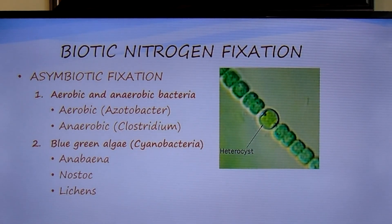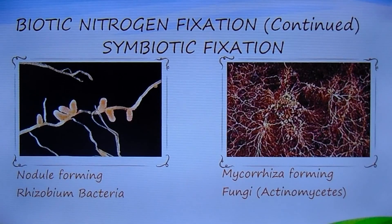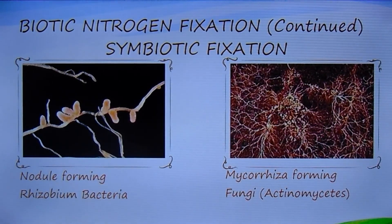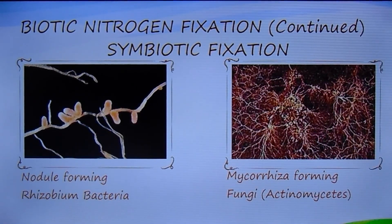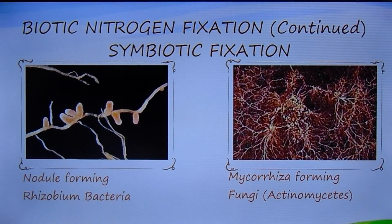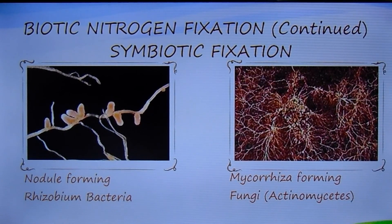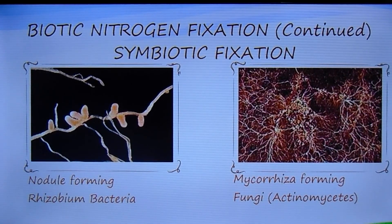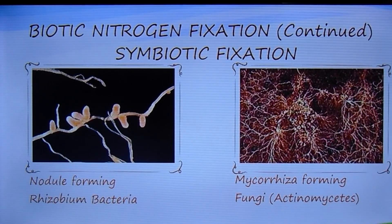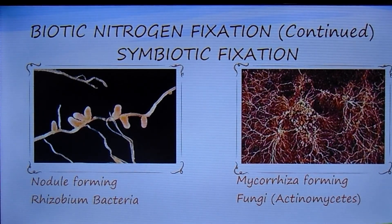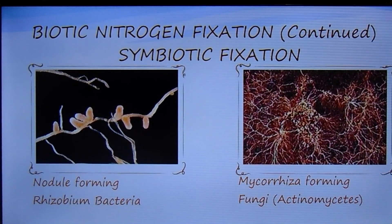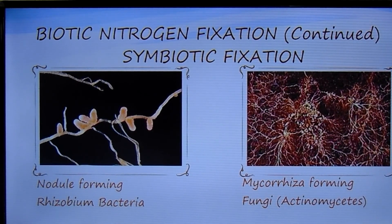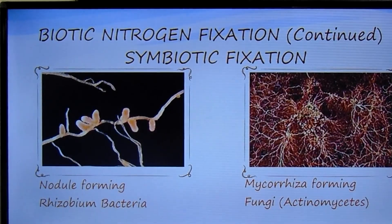Symbiotic nitrogen fixation is the most important process of nitrogen fixation. Nodule-forming Rhizobium species have developed symbiotic relationships with many leguminous plants like bean, pea, gram, and soybean — leguminous plants thereby increase soil fertility. Similarly, several species of fungi belonging to the group Actinomycetes have developed mycorrhizal associations with the roots of Pinus and other plants and fix atmospheric nitrogen.